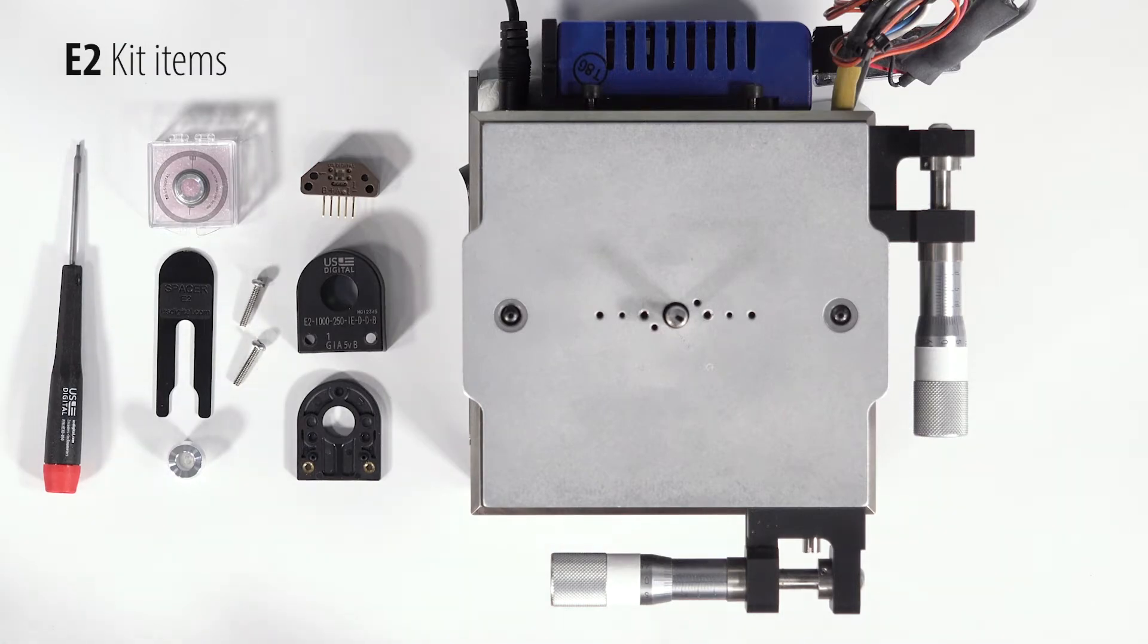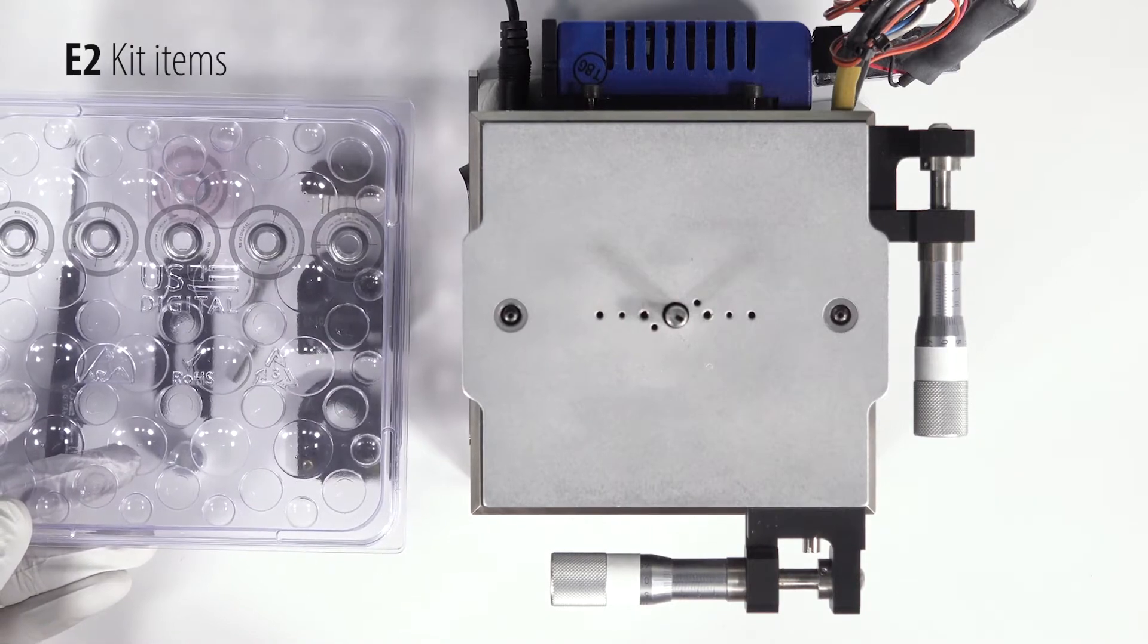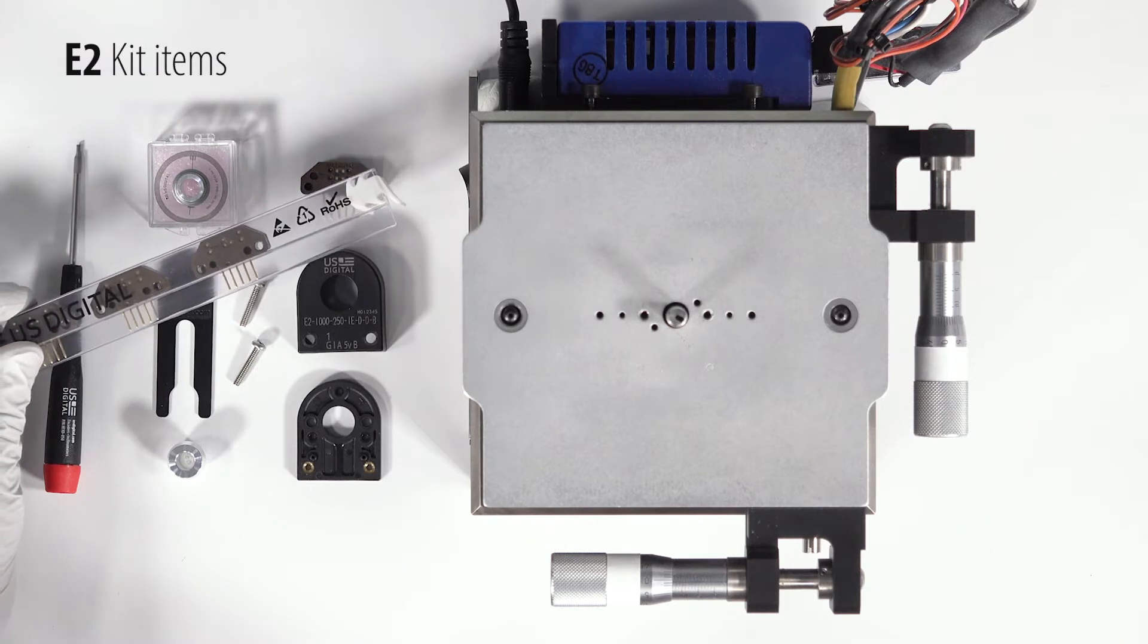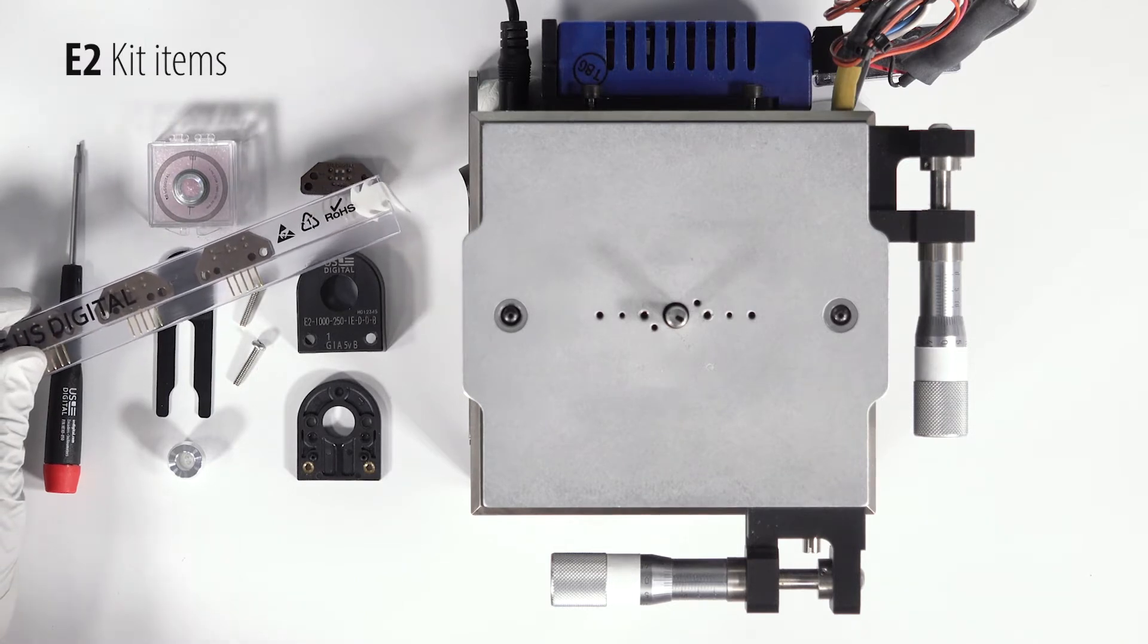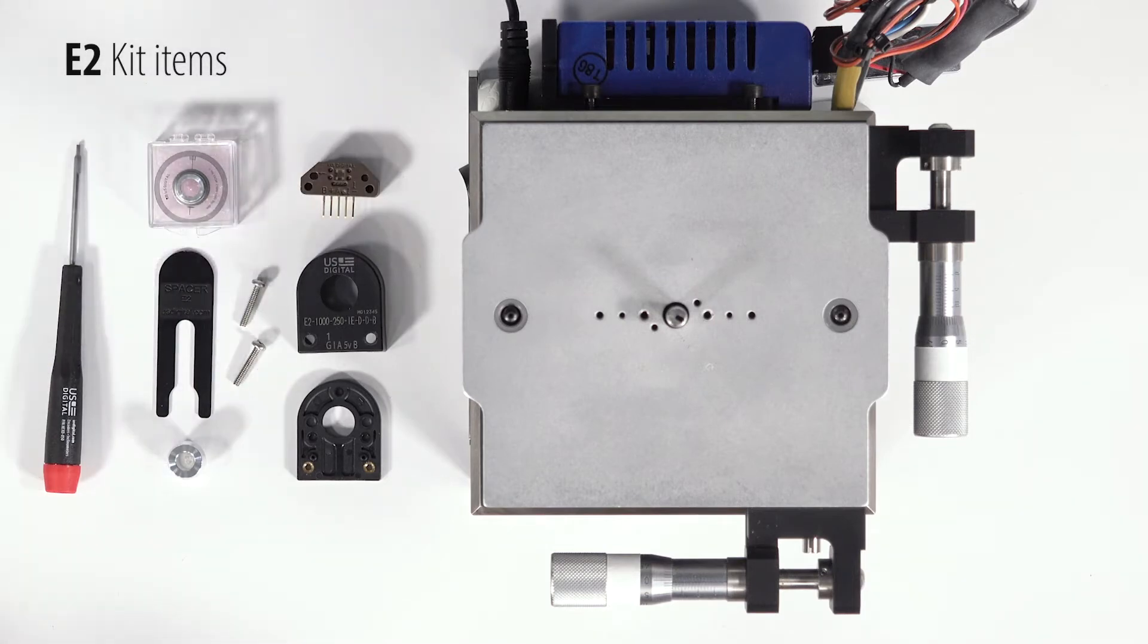You may receive packaging with the hub disks in a large tray such as this and the encoder modules may be in a tube like this, or for small quantities in a small anti-static bag. Your hex tool may be a larger driver or a small allen key like this.